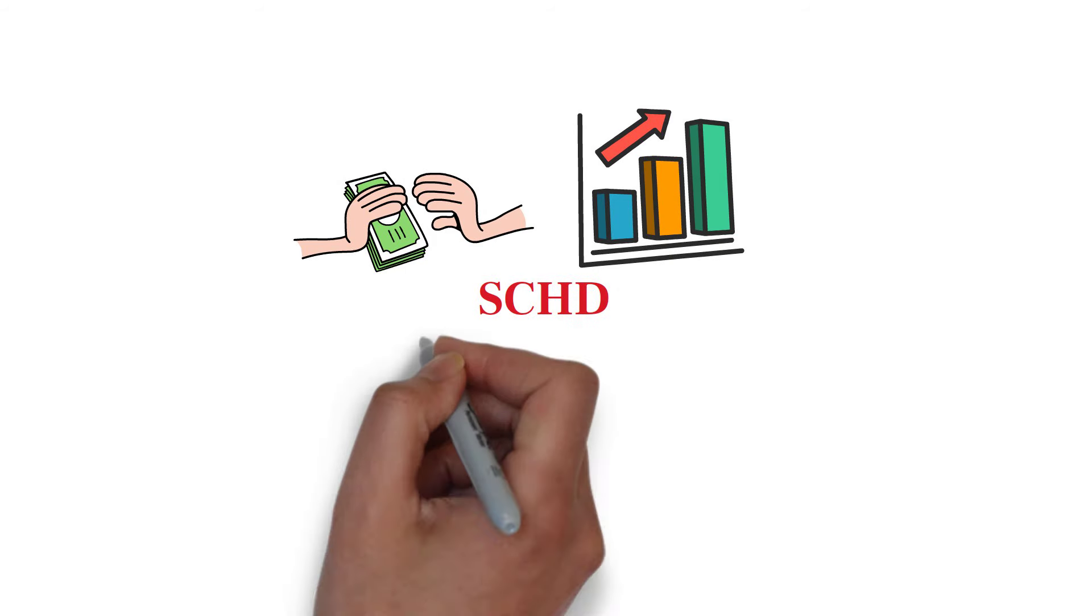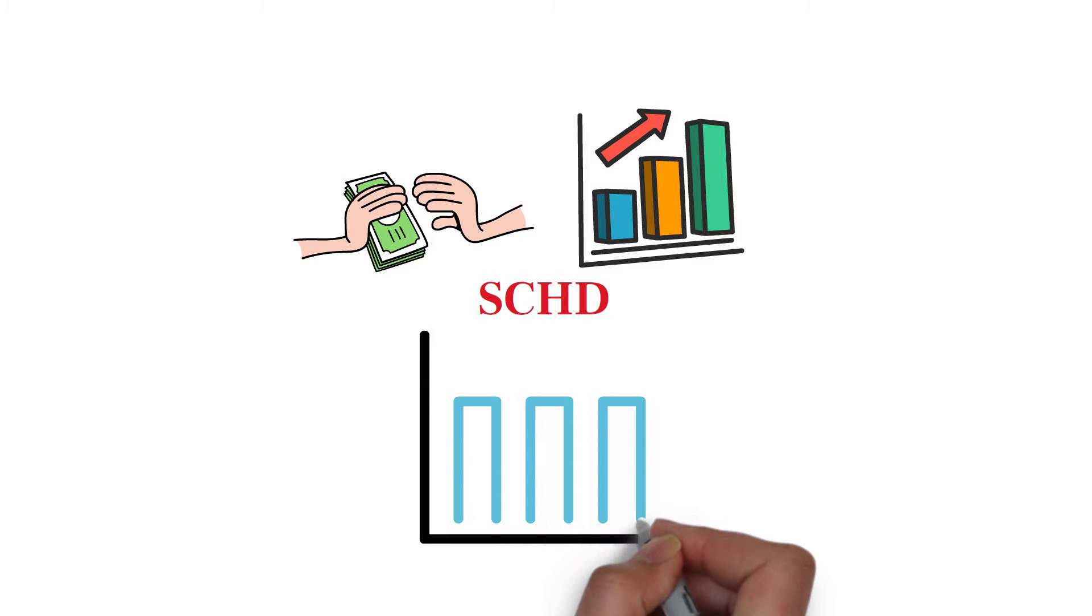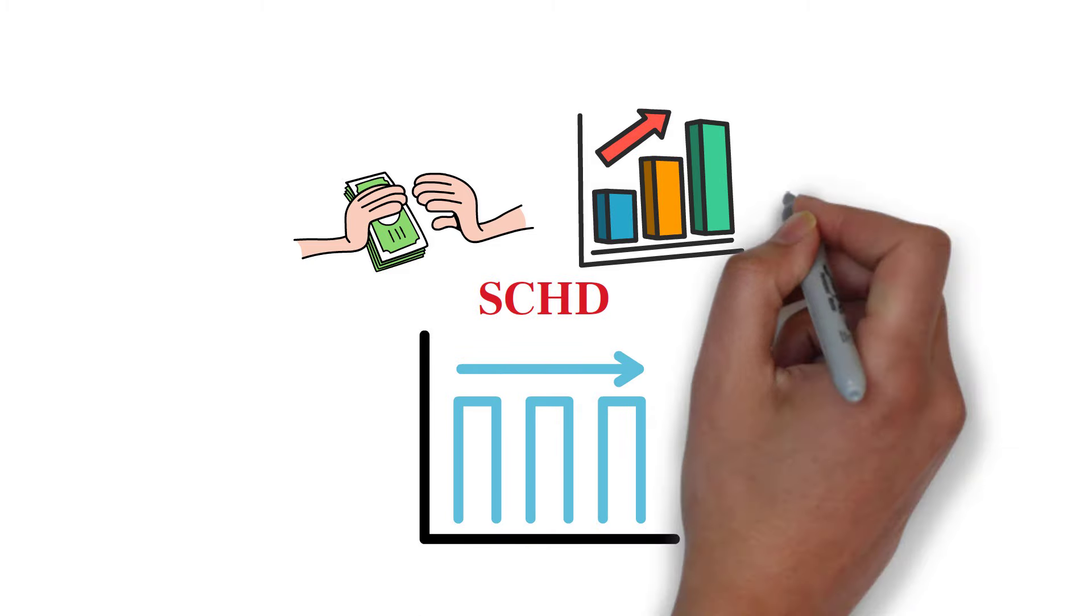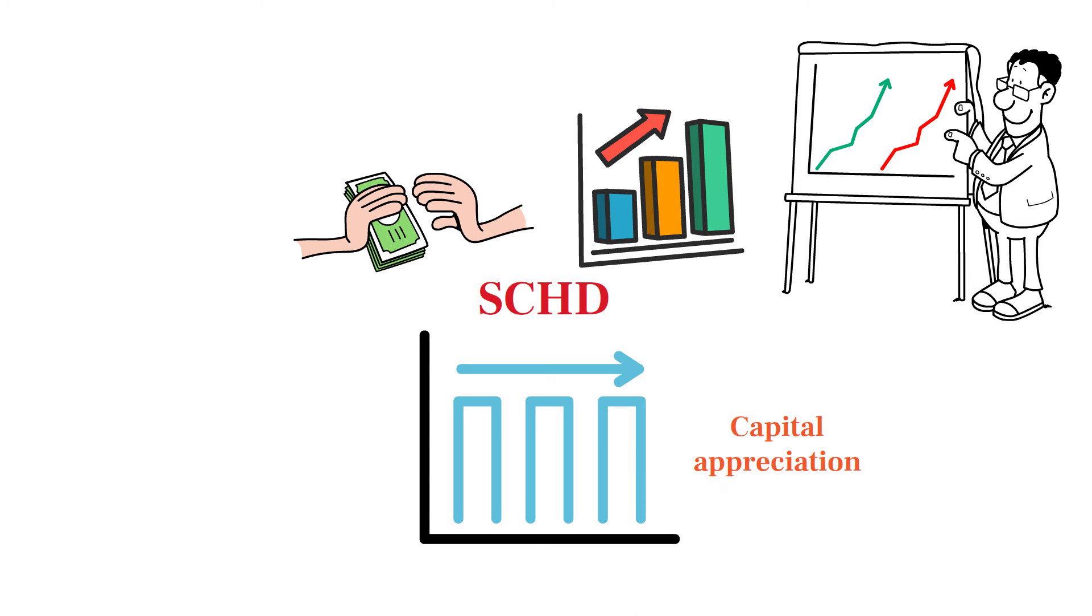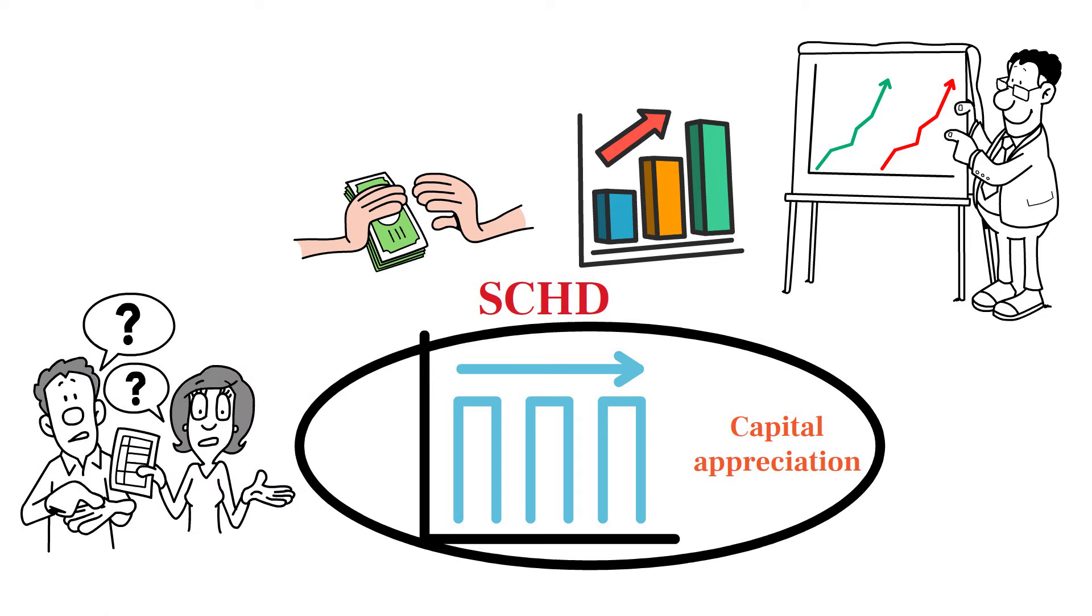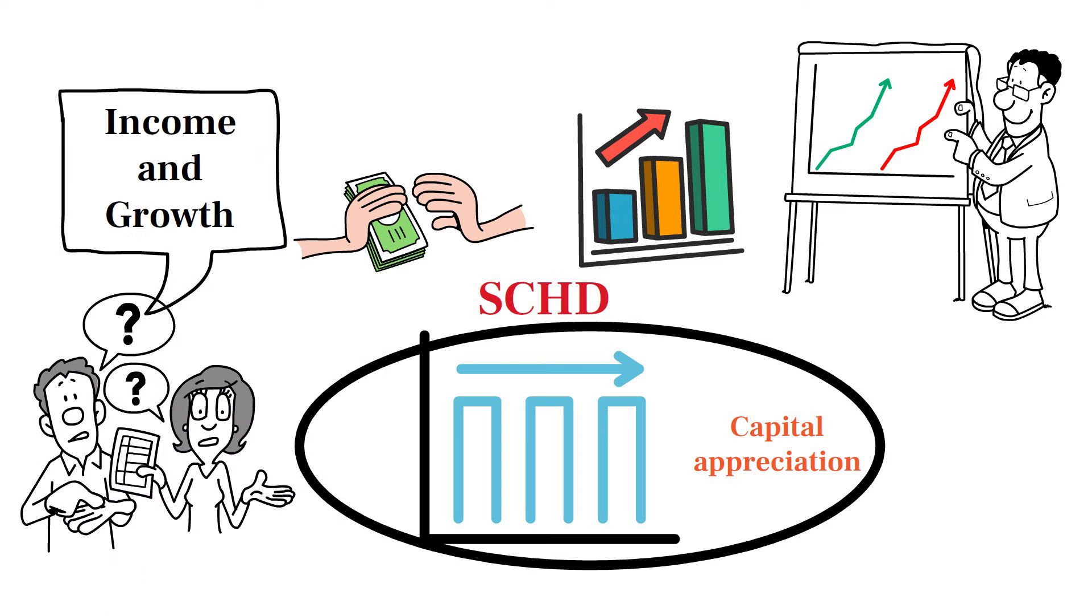SCHD is designed for those who value income but also want moderate growth in their investment portfolios. While the primary goal is to provide a steady stream of dividends, the ETF's selection of financially sound companies also offers potential for capital appreciation. This dual focus makes SCHD an excellent choice for conservative investors seeking both income and growth.